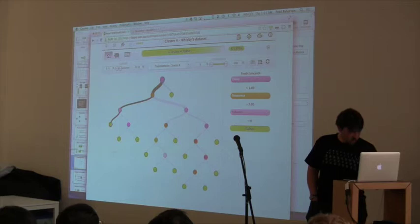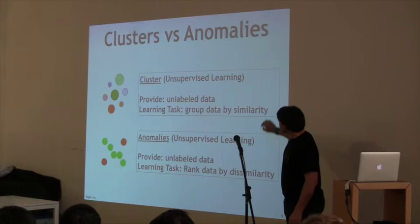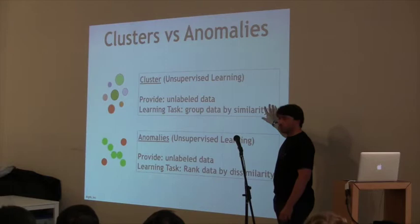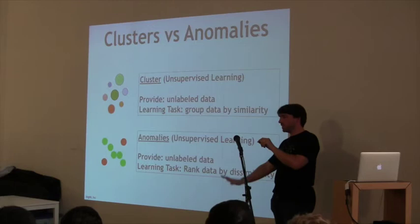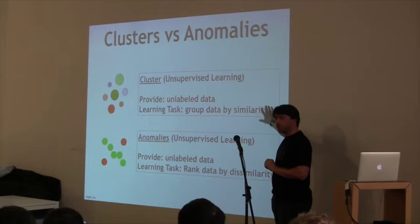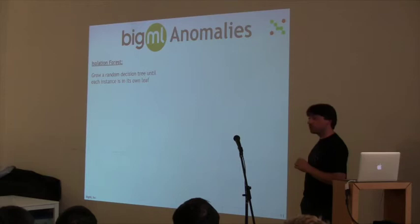Other types of unsupervised learning: anomaly detection. These are both unsupervised learning algorithms, both starting with unlabeled data. Where clustering's learning task is to group by similarity, anomaly detection's learning task is to find the dissimilar — you look at each point individually and ask: how much like the rest of the dataset are you? Then you give it a score.